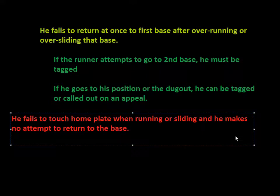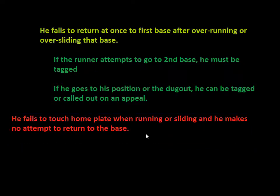This would be done on an appeal play, where a player would get the ball and step on home plate. The umpire should be watching — and a lot of times, if you watch games closely, a home plate umpire, even if there isn't a play on home plate, will actually make the safe signal whenever a runner comes across and steps on the base, just for this reason.